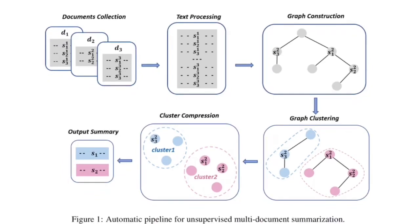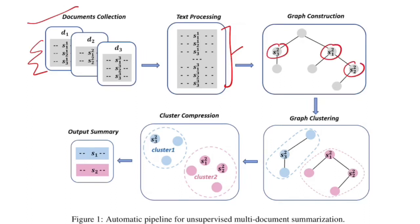This is the full pipeline flow: you have document collection D1, D2, D3 — all documents across which you want to generate a single summary, each comprising multiple sentences. You concatenate all sentences in the text processing step, construct a sentence graph where each node is a sentence, apply spectral clustering (for example if k=2, you get two clusters), then apply the compression step to get one sentence per cluster as output.